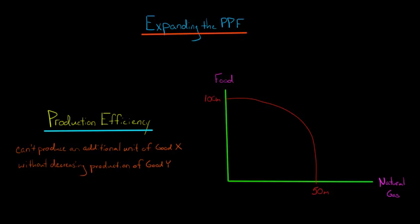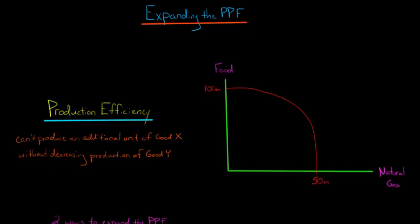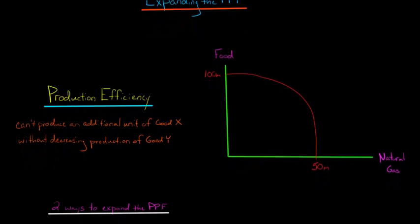Now the question is, how does this ever get bigger? Can we expand this PPF going forward so that there's a point where we could, for example, produce more than 100 million tons of food or more than 50 million tons of natural gas? And the answer is yes.